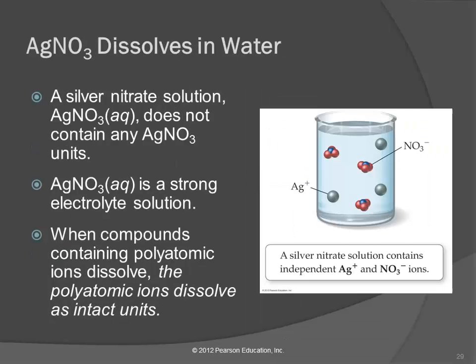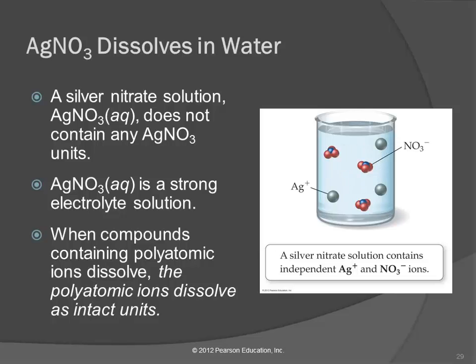Let's look at silver nitrate. Silver nitrate has the polyatomic ion nitrate, NO3⁻. Silver nitrate is a strong electrolyte — it dissolves and dissociates. When it dissociates, the silver ions separate from the nitrate ions. But a polyatomic ion like nitrate does not come apart in water — it stays together. The oxygens and nitrogen are covalently bonded, essentially superglued together. So it dissolves, but the polyatomic ions remain intact.